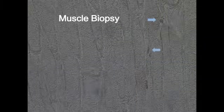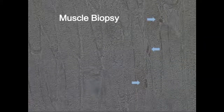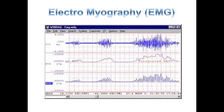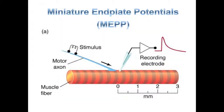Diagnosis tools include muscle biopsy to identify end plates, electromyography to show decremental compound muscle action potential, and miniature end plate potentials to show decreased amplitudes into synapses.